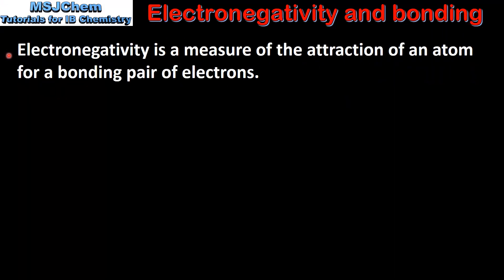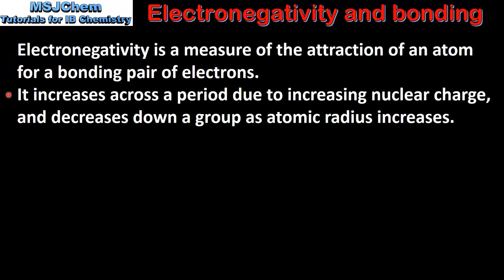Electronegativity is a measure of the attraction of an atom for a bonding pair of electrons. It increases across a period due to increasing nuclear charge and decreases down a group as atomic radius increases.